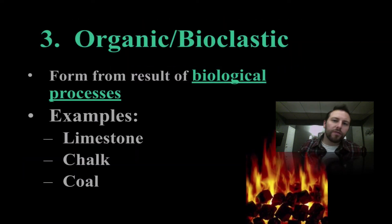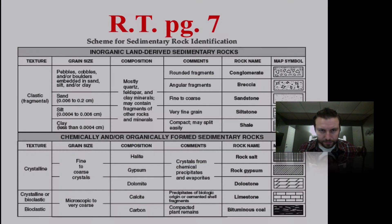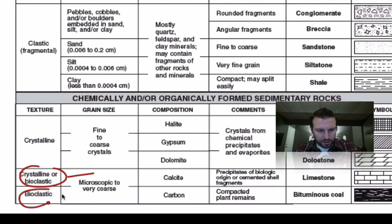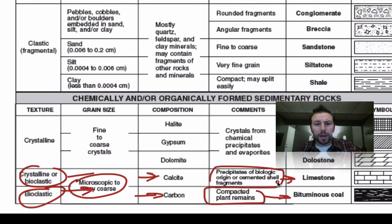Our last type is organic or bioclastic sedimentary rocks. These form as a result of biological processes. Examples include coal, chalk, and limestone. Looking at page seven for bioclastic rocks, calcite and carbon are the common compositions — formed from precipitates of biological origin, cemented shell fragments, or compacted plant remains, giving us coal and limestone.